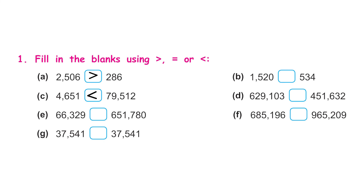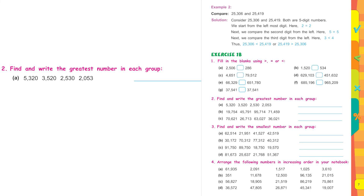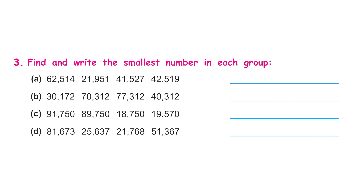Question 2: find and write the greatest number in each group. They have given four numbers — count the digits: each number has four digits. Start from the left-most digit: the first number has 5, the next 3, then 2, then 2. Five is the greatest of all, so the greatest number is five thousand three hundred and twenty.